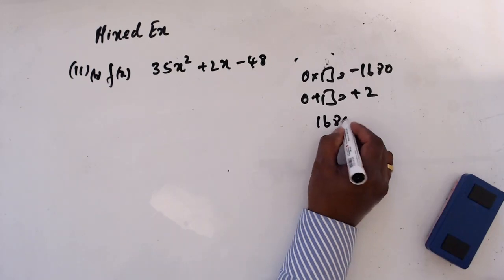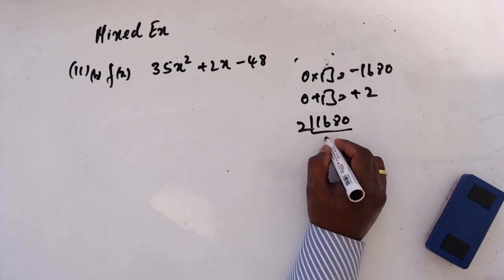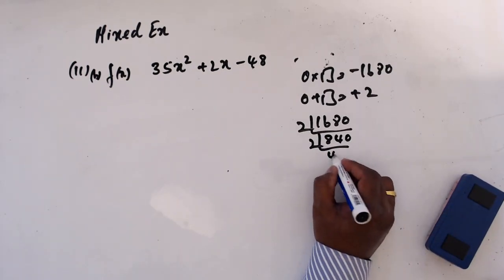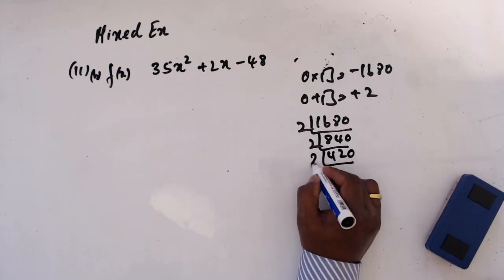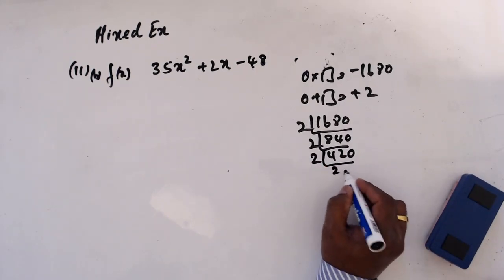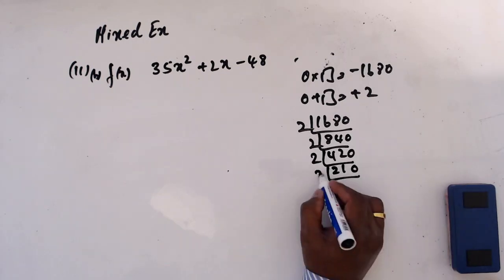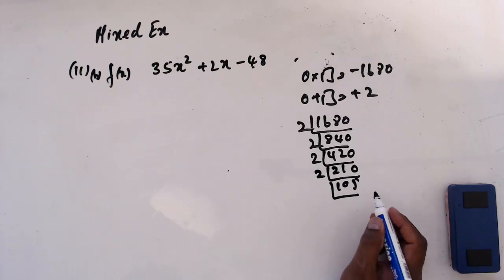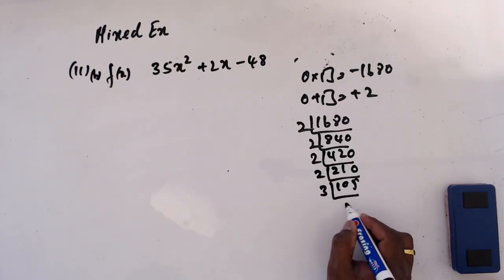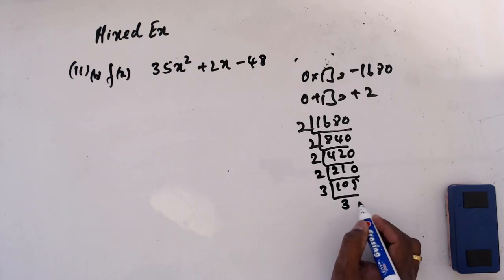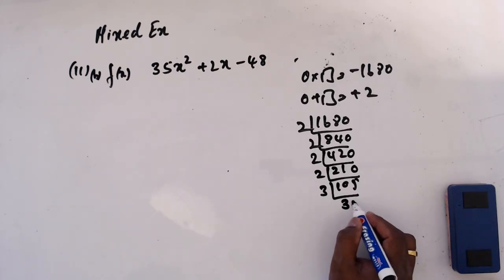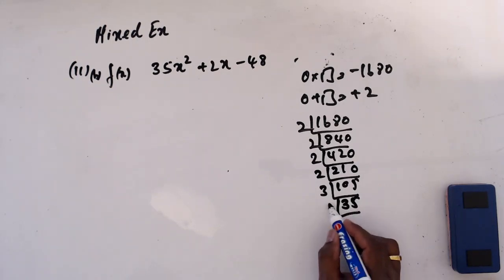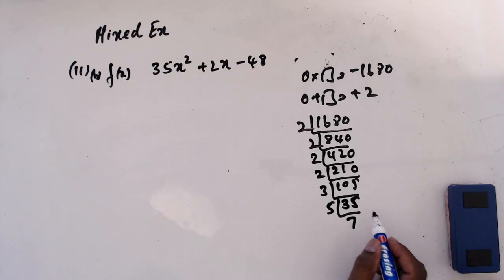Looking at factor pairs: 63 and 82, then 84 and 3, then 35, then 5 and 7 — those are the factor combinations to consider.